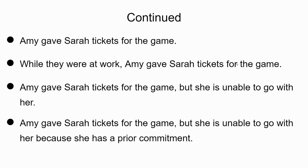'Amy gave Sarah tickets for the game' — that's an independent clause. 'While they were at work, Amy gave Sarah tickets for the game' — now I have a dependent clause, comma, independent clause: a complex sentence. 'Amy gave Sarah tickets for the game, but she is unable to go with her' — two independent clauses joined together: a compound sentence. Then adding 'because she has a prior commitment' — 'because' is one of those markers — that's a dependent clause. So I have two independent clauses and a dependent clause: a compound-complex sentence.